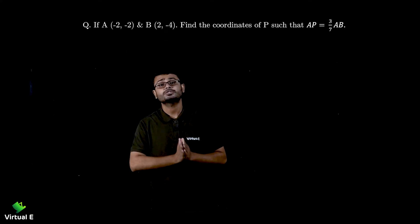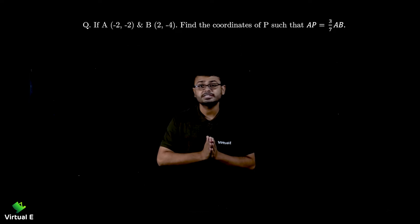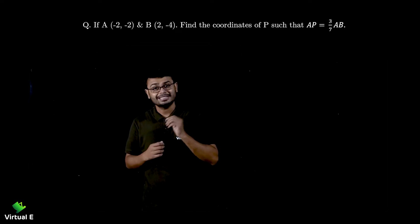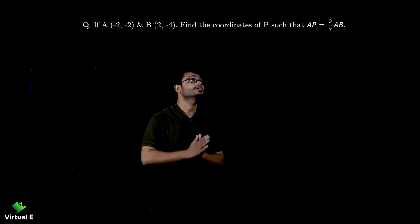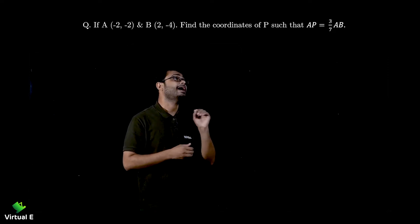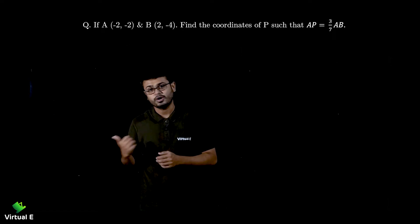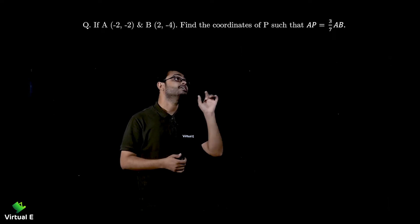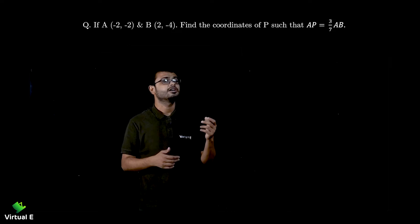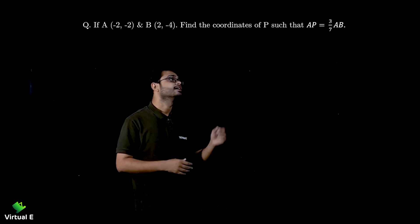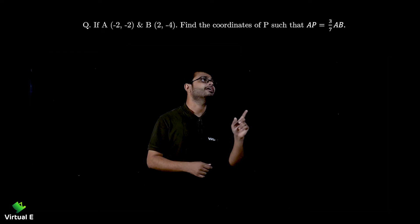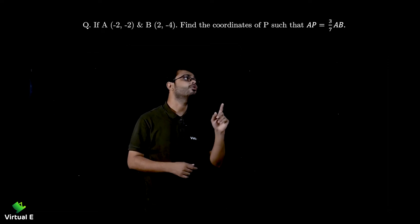We discussed the case with the y-axis. Now let's discuss the case with the x-axis. Let's read the question: Find the ratio in which the x-axis — previously it was y-axis — divides the line segment joining the points. The points will be changed, which are 1 comma minus 5 and minus 4 comma 5.